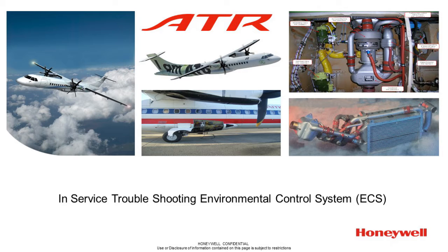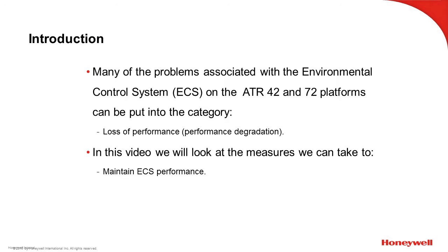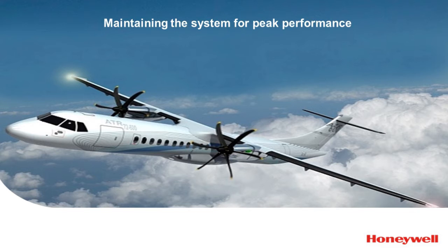Many environmental control system issues reported on the ATR 72 and 42 platforms can be attributable to preventable loss of system performance. In this video we will examine the most common cause of reduced system performance along with some simple maintenance activities that may be used to maintain optimal ECS performance.